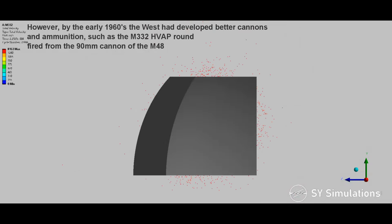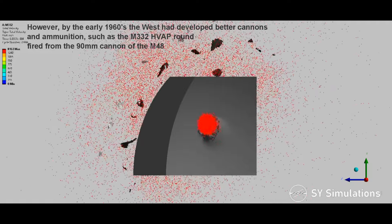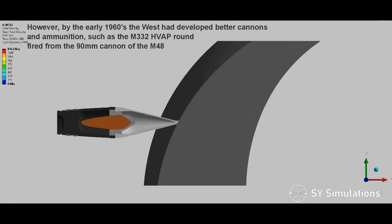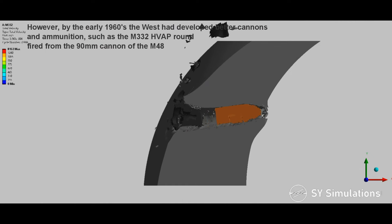However, by the early 1960s the West had developed better cannons and ammunition, such as the M-332 hypervelocity armor-piercing round fired from the 90mm cannon of the M-48.